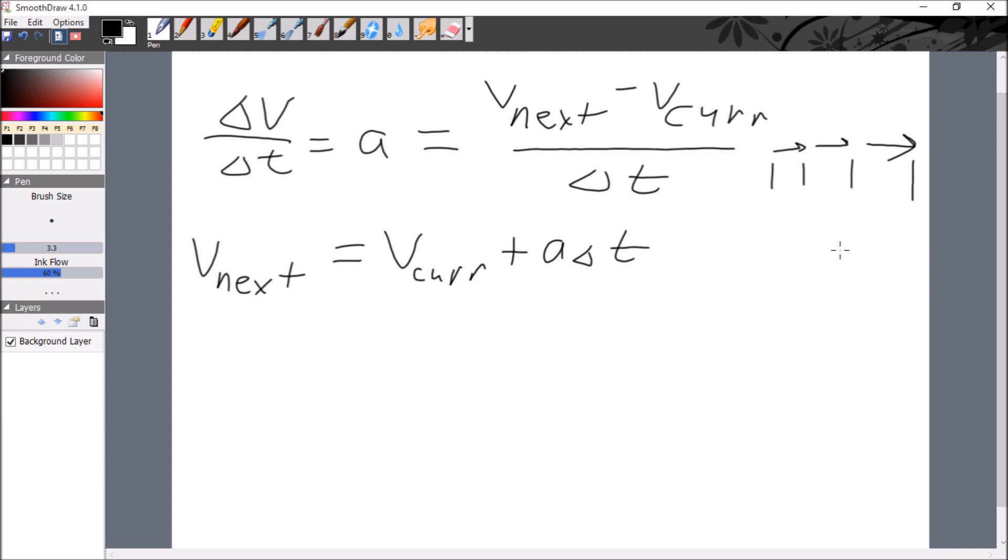And what that means is if I know the speed at point one, I can get the velocity at point two. Then once I know the velocity at point two, I get the velocity at point three. Then I get the velocity at point four. So all I need is one initial value and then I can get the rest of the values. That's why we call it an initial value problem.